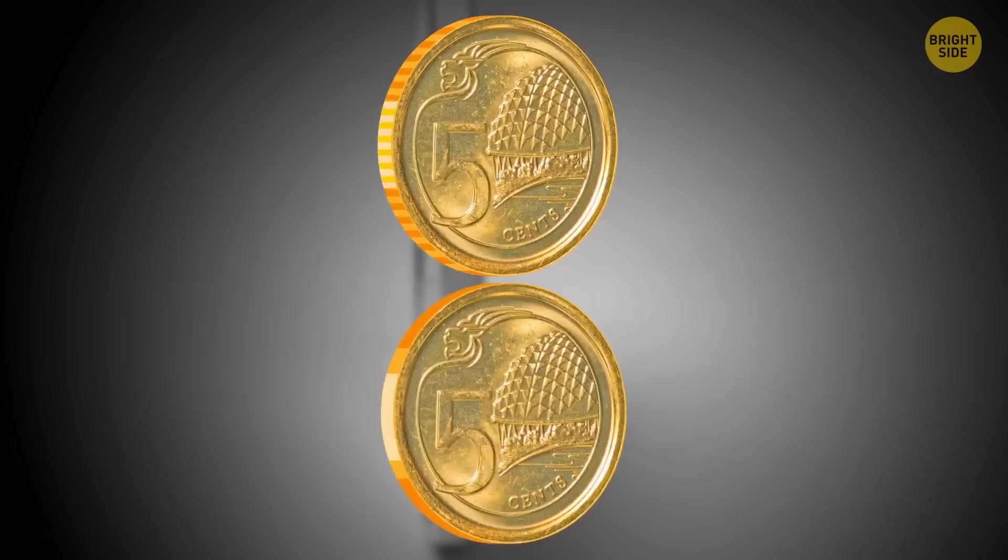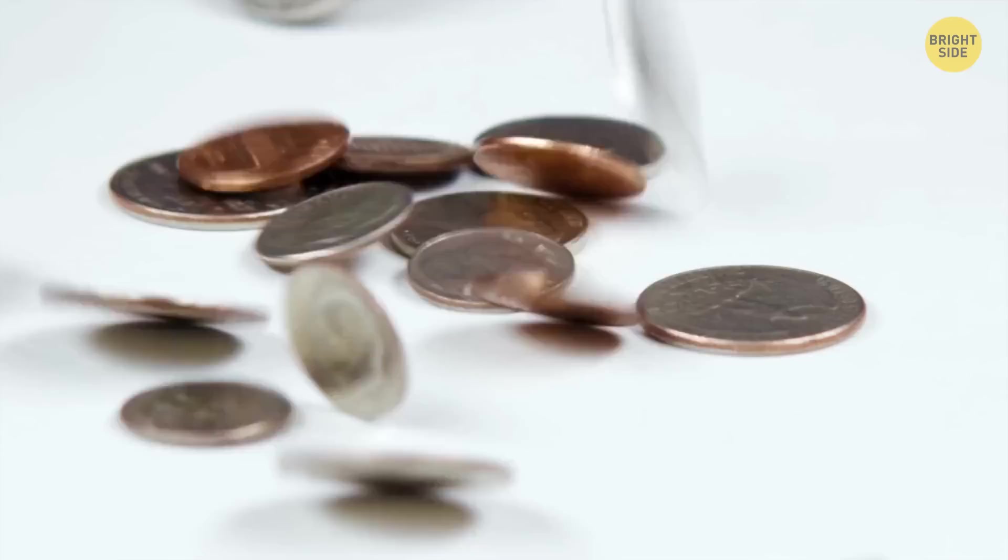Those ridges on the edge of dimes aren't just for show. People used to shave off the edges, then melt the edges down into new coins. But thanks to the new design, it's easy to tell if someone's been shaving the edges off.